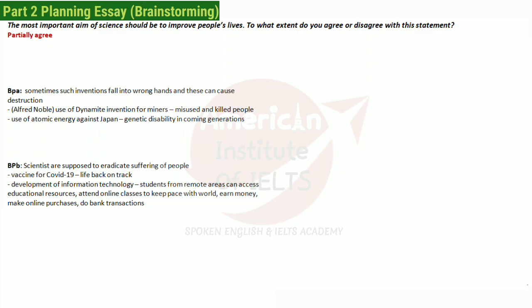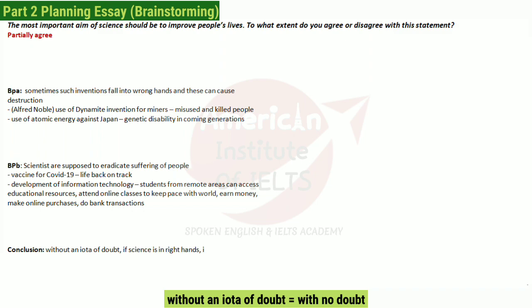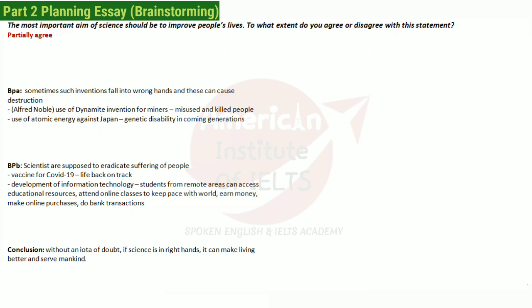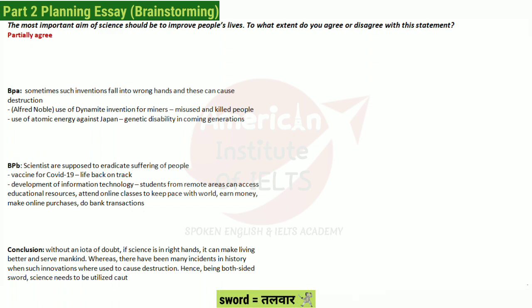Now we've come to the end of planning. Since we are neutral, we'll conclude by covering both points: without a doubt, if science is in the right hands, it can make living better and serve mankind. On the other hand, there have been many incidents in history when innovations were used to cause destruction. We'll end with the line: 'Hence, being a double-edged sword, science needs to be utilized cautiously.'